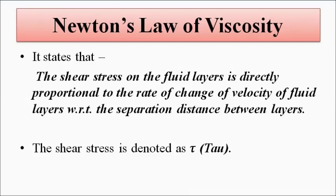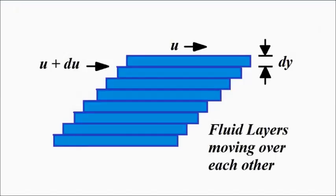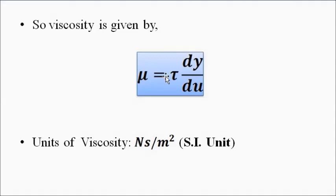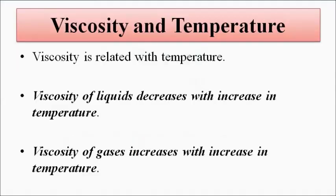This rate of change is called the velocity gradient. If we consider various fluid layers with separation distance dy and relative velocities u and u plus du, then according to Newton's law of viscosity the shear stress is given by tau, which is directly proportional to the velocity gradient du by dy, where tau equals mu times du by dy. Here mu is the coefficient of viscosity, or we can say the coefficient of viscosity is tau times dy by du.